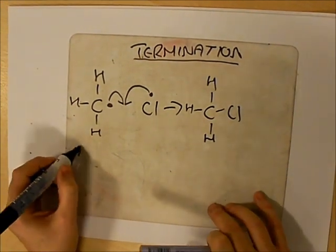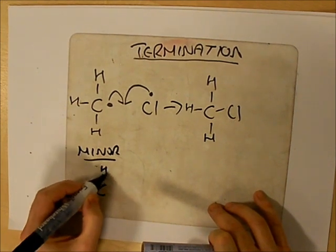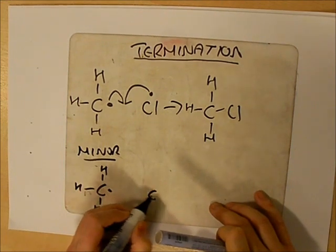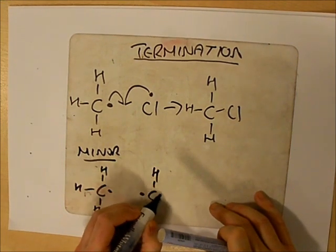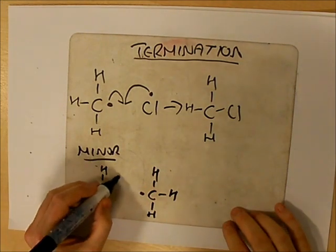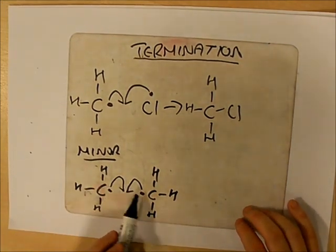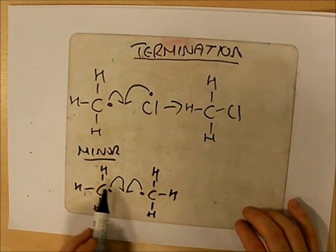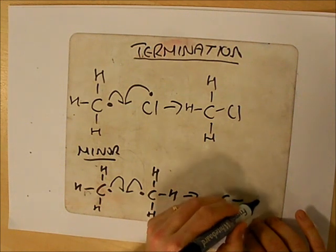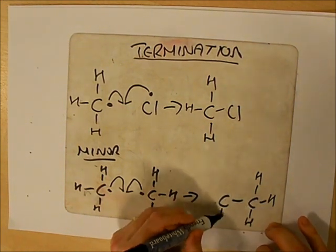There is a minor product which can form, and it's when two methyl radicals meet each other. We're showing the arrows going to the center of the bond that's going to form. And this is going to make another alkane with two carbons, better known as ethane.